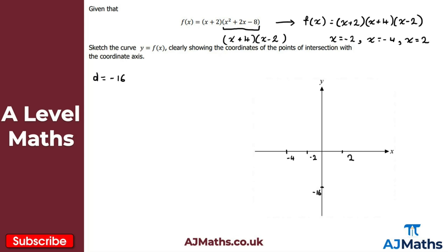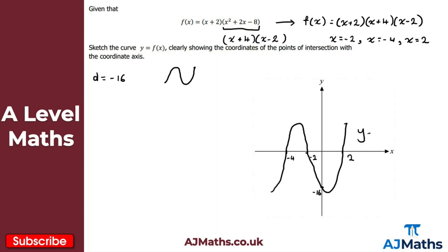Marking those on: minus 4, minus 2, and positive 2. For the y-intercept, d equals 2 times 4 times minus 2, which is minus 16. The general shape: x times x times x is x cubed, so a positive cubic — n going into a u. Starting in the bottom left, we go through minus 4, come up to make the n shape, come back through minus 2, go through minus 16 on the y-axis, then come back up at positive 2. That's y equals f of x.